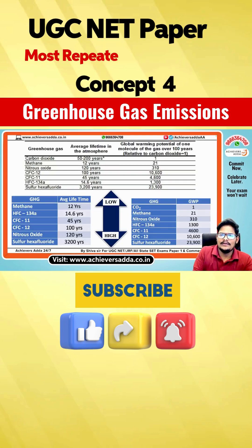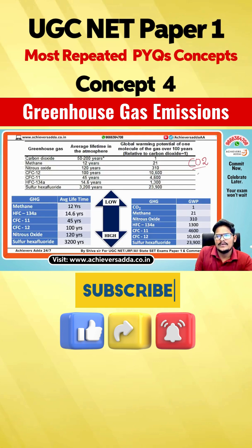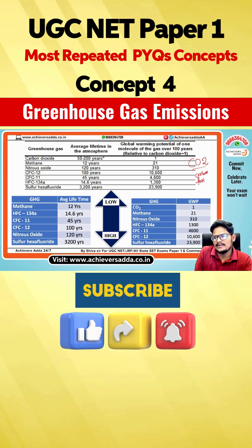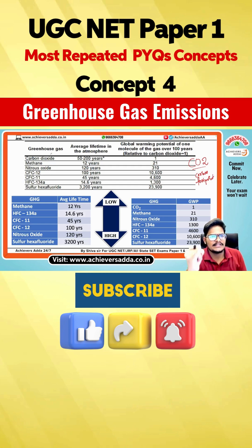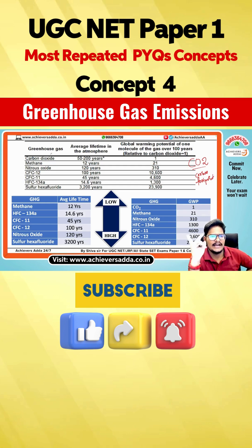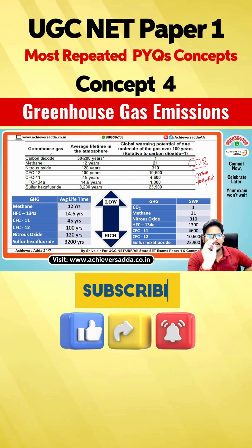The major element every greenhouse gas will be compared with is carbon dioxide — we call that the carbon footprint, because carbon dioxide is the major element. The greenhouse gases include carbon dioxide, methane, nitrous oxide, CFC-11, CFC-12, HFC-134a, and sulfur hexafluoride.